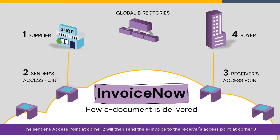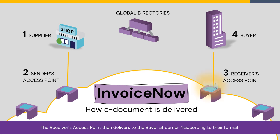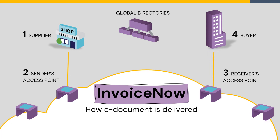Once this step is completed, the sender's access point at corner two will then send the e-invoice to the receiver's access point at corner three. The receiver's access point then delivers the e-invoice to the buyer at corner four.